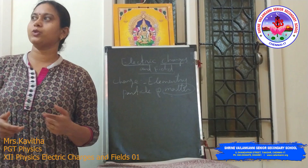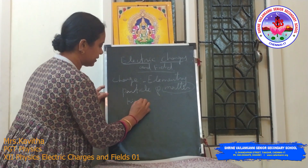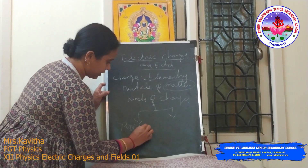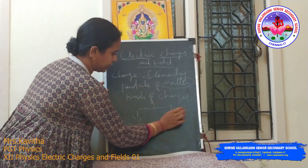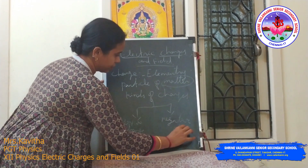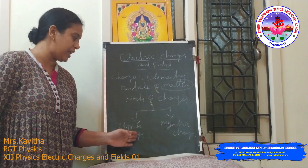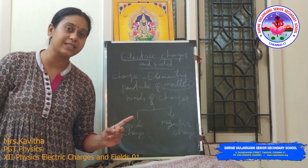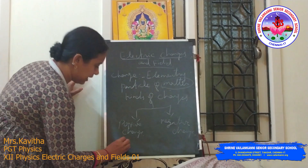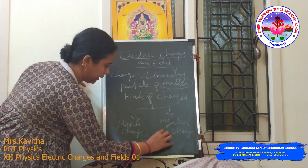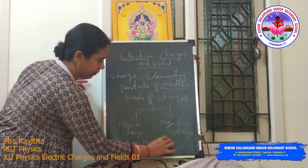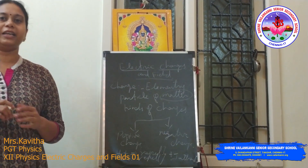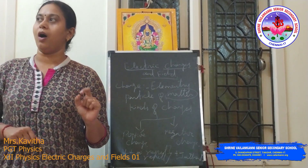The next one is the kinds of charges. That we all know: positive charge and negative charge. From the basics, the property we know is that like charges repel — positive-positive will repel, negative-negative will repel — or positive-negative, that means they will attract each other. This is one of the basic properties of charge.